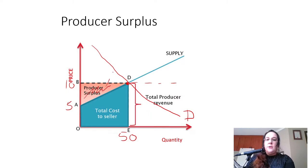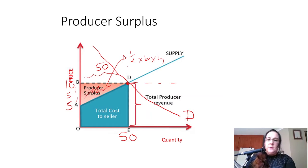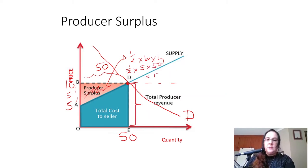Using the same formula — half times base times height — my height is $5, which is the difference between $10 and $5, and my base is 50. So it's half times 5 times 50, which gives me $125.